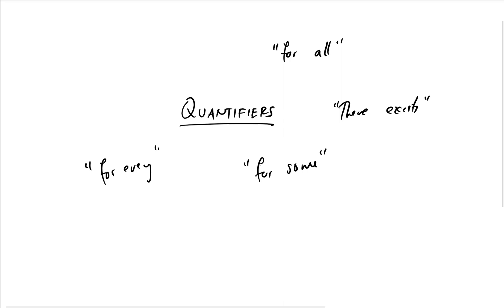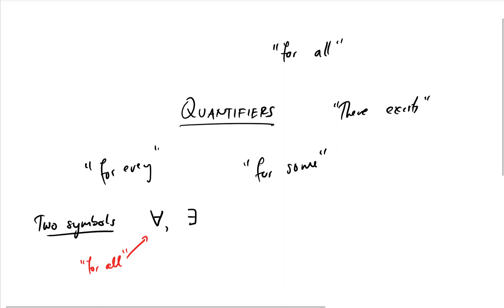There are two symbols. One looks like an A that's upside down, and one looks like an E that's back to front. You can read the upside-down A as 'for all' and the backwards E as 'there exists'.